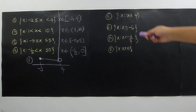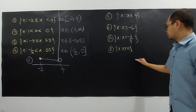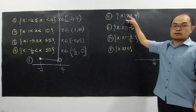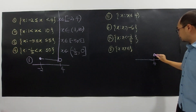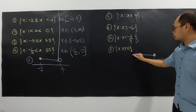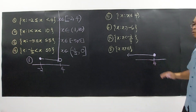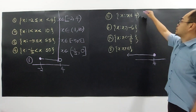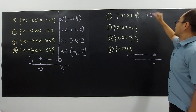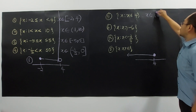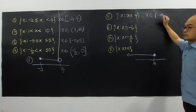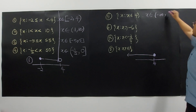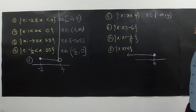Now let's look at unbounded intervals. For X less than or equal to 4, we include 4 with a closed bracket. All real numbers less than 4 extend to the left — toward negative infinity. We always use an open bracket for negative infinity because we don't know what that number is. So we write this as negative infinity to 4, with a closed bracket at 4.